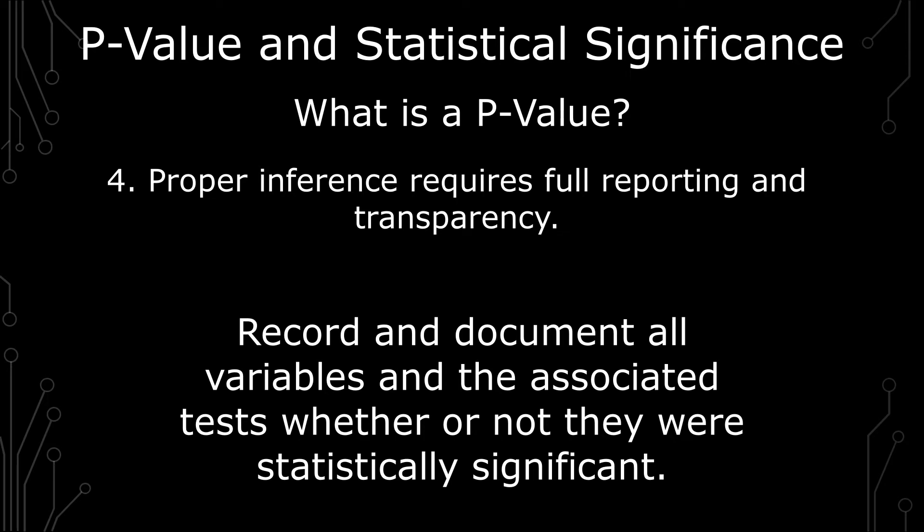One, maybe you have an idea and someone's already done it but you don't know they've done it because they weren't allowed to have their study published because the publishing firm or the journal wanted it to be significant statistically. And that's just not appropriate in terms of scientific endeavors because you end up with a lot of people wasting their time doing the same study over and over and over again. So it's important to notate the variables that were not significant and to document what hypothesis weren't successful.